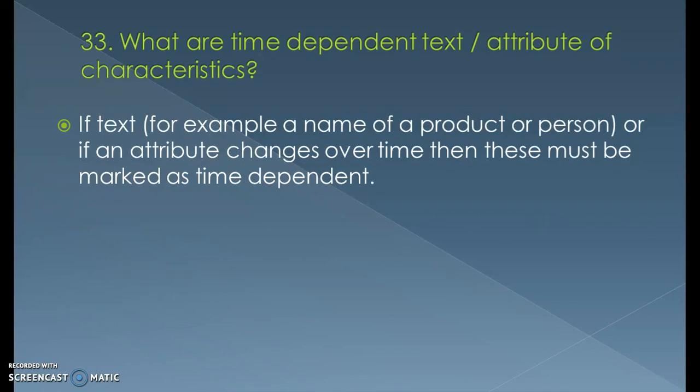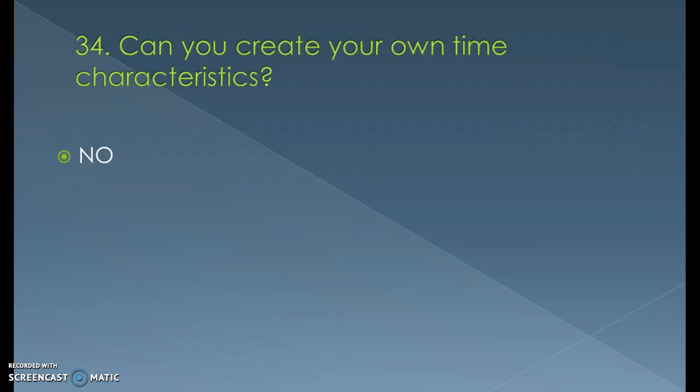What are time-dependent texts or attributes of characteristics? If a text — for example a name of a product or person — or if an attribute changes over time, then these must be marked as time dependent. Can you create your own time characteristics? No. There are 13 standard time characteristics, and only those 13 can be used across projects. We cannot create our own time characteristic.